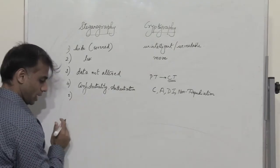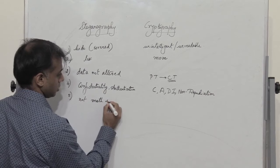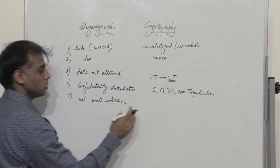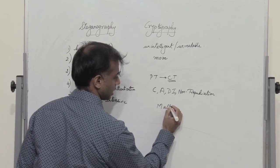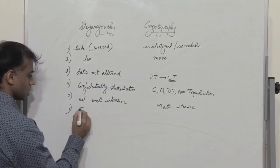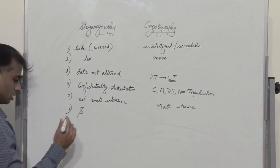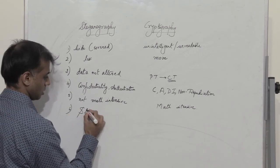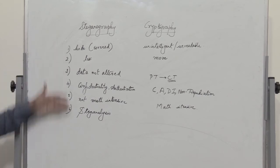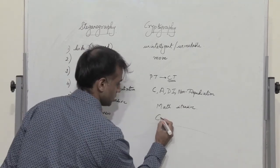Most steganographic algorithms are not very mathematically intensive, whereas in cryptography most of the algorithms are highly mathematically intensive. Additionally, the ways and methods used to break any steganographic code or algorithm is known as steganalysis, while the equivalent method for cryptography is known as cryptanalysis.